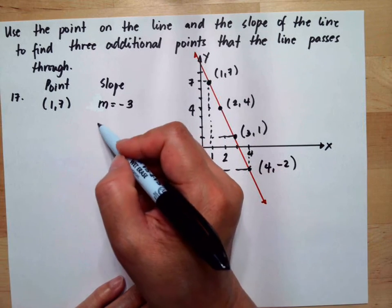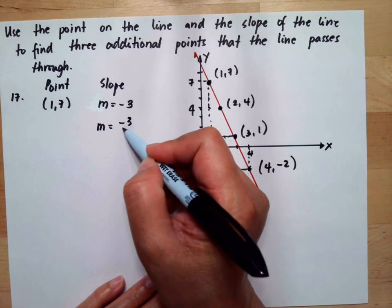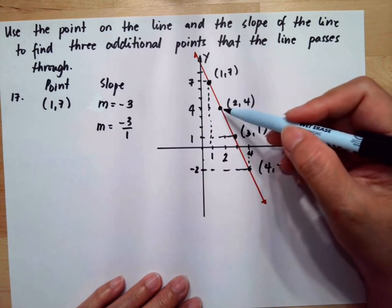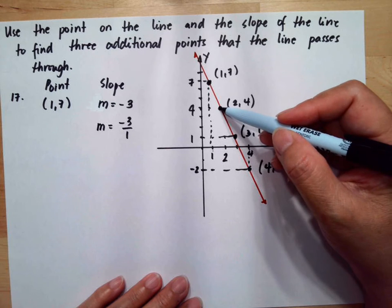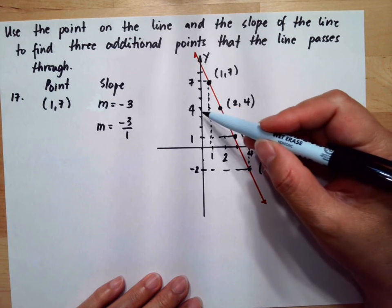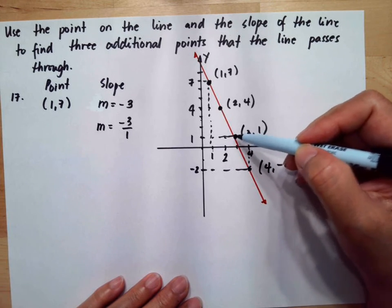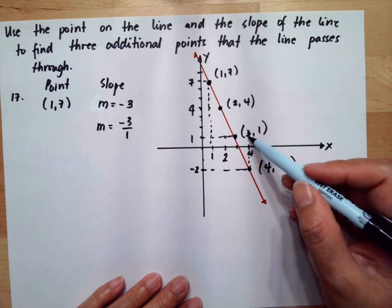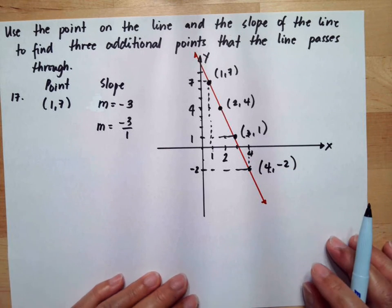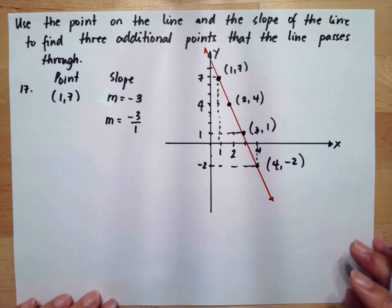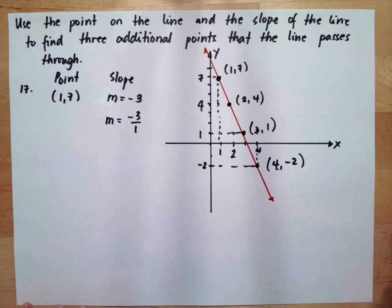And the slope is negative 3 over 1, so one step to the right. So if this is 1, we will have 2. Then another 3 steps down, then if this is 2, this will be 3. Then 3 steps down, if this is 3, this will be 4. So that's how we identify the three points that we needed for this problem.